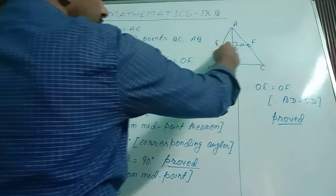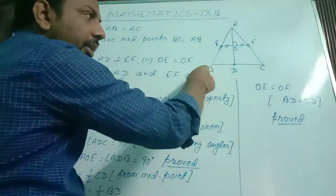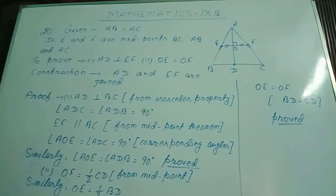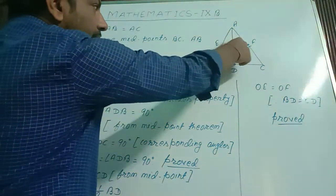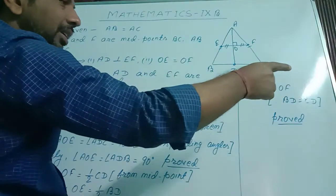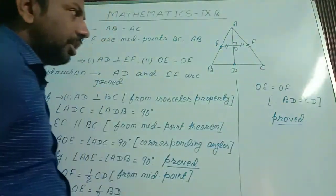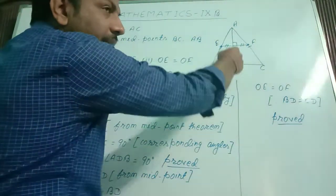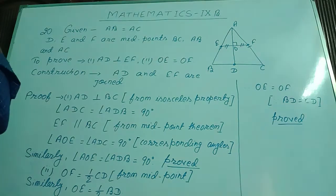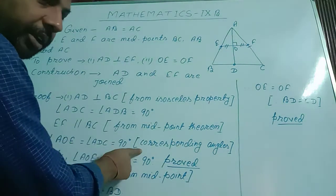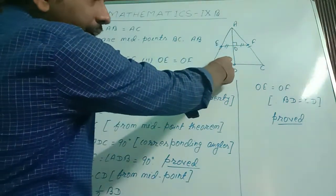EF is parallel to BC because EF is the line joining the midpoints of two sides, so the line joining midpoints of two sides is parallel to the third side. Therefore angle AOE is equal to angle ADC equal to 90 degrees, because these are corresponding angles. When EF is parallel to BC, OF is also parallel to BC, so angle AOE and angle ADC are corresponding angles. If angle ADC is 90 degrees, then angle AOE will also be 90 degrees — part one is proved.